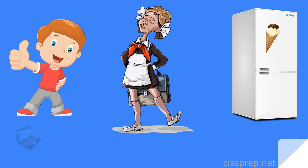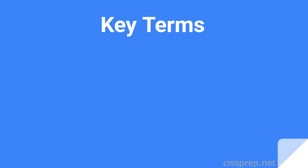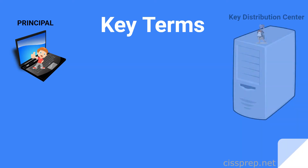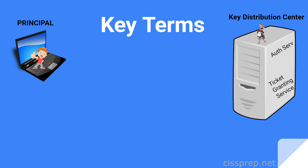Think of the user as the kid. The parent is the KDC, or the key distribution center, or the gatekeeper, and the freezer is the destination server — the resource that the kid wants access to, in this case ice cream. Some key terms: the user is called the principal. The KDC, or key distribution center, is the gatekeeper and has two components — the authentication service and the ticket-granting service.